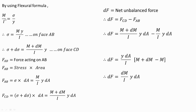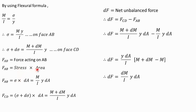We know that M/I = sigma/y, so bending stress sigma equals M·Y/I. This is for face AB. On face CD it will be sigma plus d-sigma equals (M plus dM)·Y divided by I. Now the shear force acting on face AB will be equal to stress into area — stress is sigma and the elementary area is dA — so it is (M·Y/I)·dA.